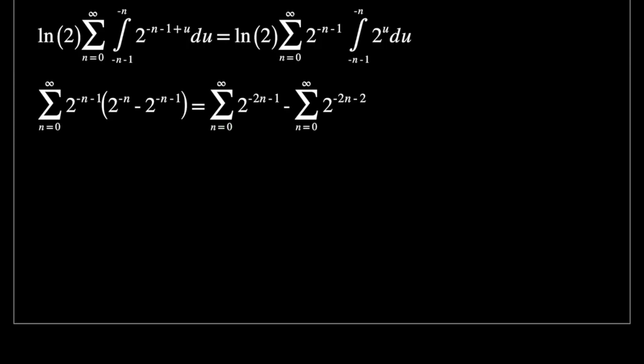So we can take those out and we're going to get 1 over 2 in front here and 1 over 4 over here. Now notice that these two sums are the exact same. And so we can just subtract a fourth from a half and we're going to get a fourth times our sum. Now, looking closely at this sum, we can see that it's 2 to the power of minus 2 to the power of n, which is going to give us 1 over 4 to the power of n. And this is a basic geometric series known very well.